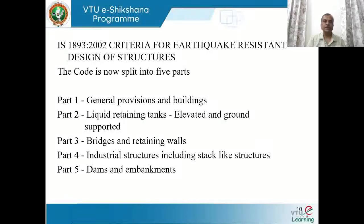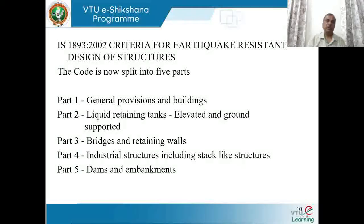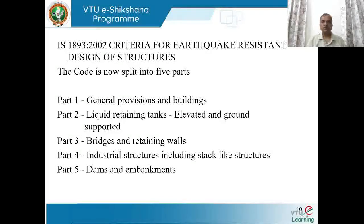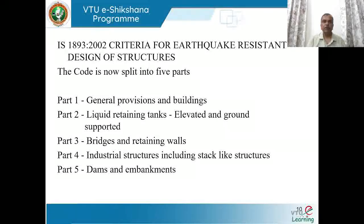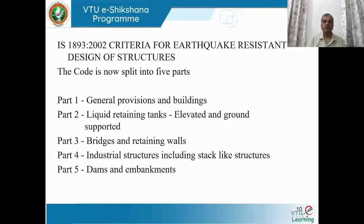For earthquake-resisting structures, we have IS 1893:2002 — Criteria for Earthquake Resistant Design of Structures. This code, now split into five parts similar to IS 875, is very useful when you take up advanced analysis and design of steel structures or pursue a master's degree with a subject on earthquake analysis and design of RCC and steel.